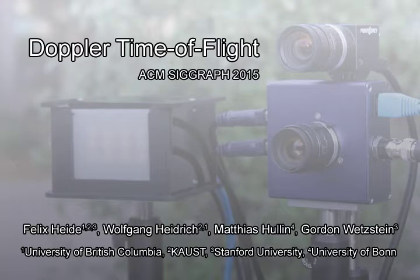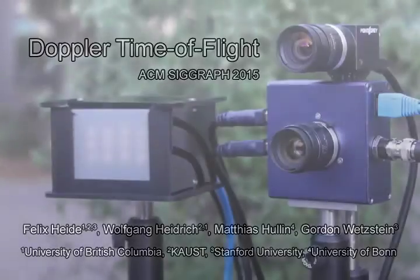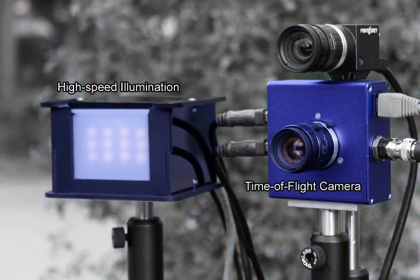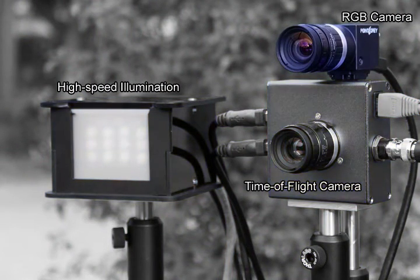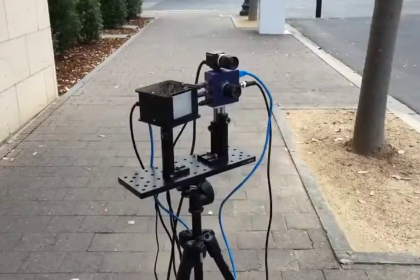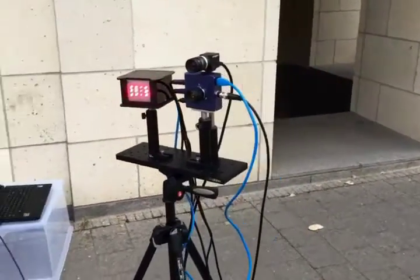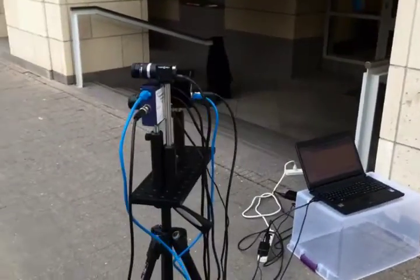We introduce Doppler time-of-flight as a new computational imaging technique that facilitates direct measurement of per-pixel velocity. Our technique requires a time-of-flight camera and a high-speed light source. An optional RGB camera can be used to record color information as well. The prototype camera uses red laser diodes that provide eye-safe illumination and a working range of a few meters.